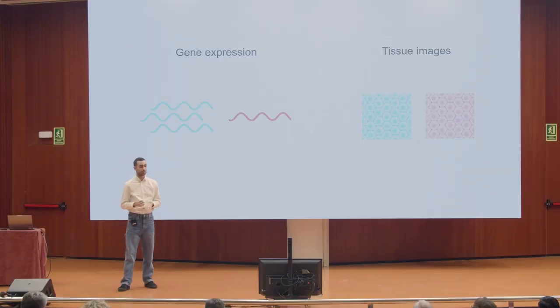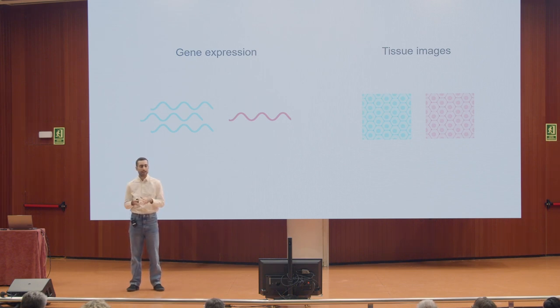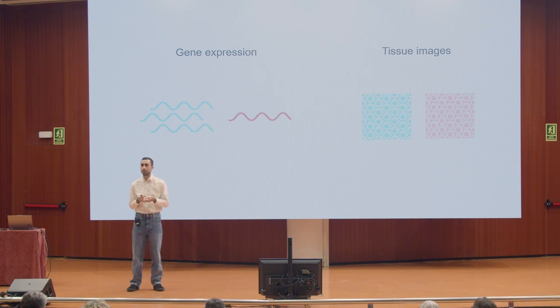A nice thing about our data is that for every gene expression sample, we have matched tissue images, so we can study if smoking also affects tissue architecture. We used AI — basically, we built deep learning models trying to distinguish smokers from non-smokers. We got accuracies over 80 percent in lung and thyroid, which suggests that smoking is also really affecting tissue histology.